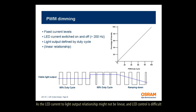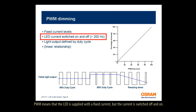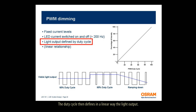As the LED current to light output relationship might not be linear and LED control is difficult at low current levels, dimming is best done with pulse width modulation, or PWM. PWM means that the LED is supplied with a fixed current, but the current is switched off and on. The duty cycle then defines, in a linear way, the light output. The PWM frequency has to be at least a few hundred hertz to avoid noticeable light flicker.